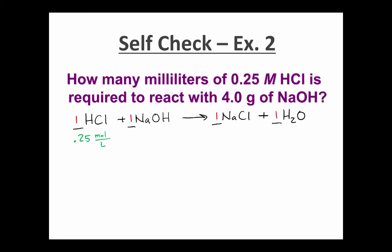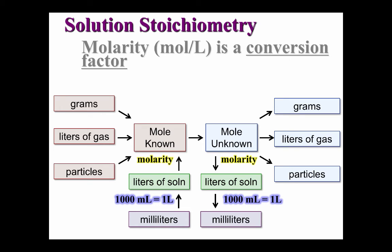We also know the mass of NaOH is 4 grams. At first glance this looks like a limiting reactant problem, but look carefully — we're looking for milliliters of HCl, so the unknown is the volume of HCl in milliliters. Since the unknown is HCl, the known substance is NaOH. Our stoichiometry strategy: start with grams of known, go to moles of known, use the mole ratio to get moles of unknown, then use molarity to convert to liters of solution, and finally convert to milliliters.